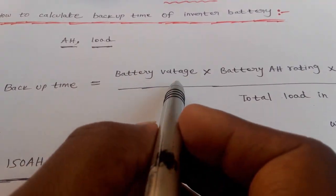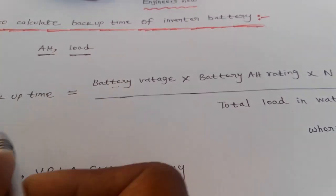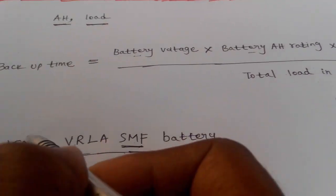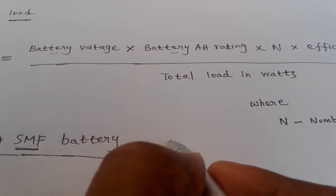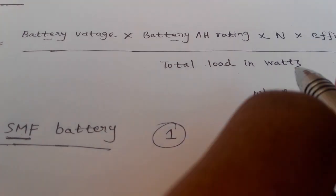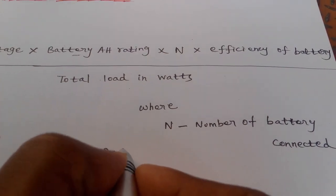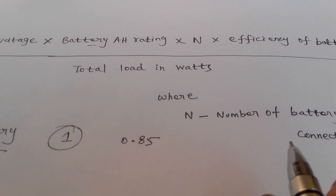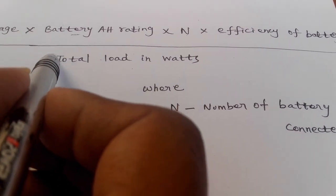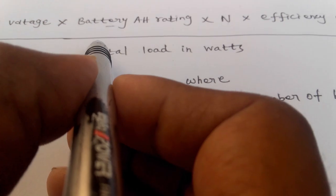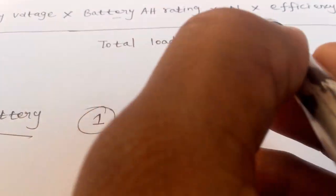So for the 12V 150Ah VRLA SMF battery, the formula is battery voltage 12V, ampere rating 150Ah, the efficiency is a constant 0.85, divided by the total load from the inverter.